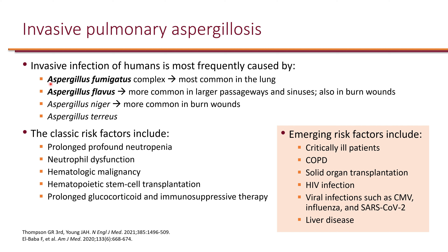Here are the common aspergillus species. Pretty much most of these are due to Aspergillus fumigatus for pulmonary aspergillosis, as well as Aspergillus flavus. The rest are not commonly seen in the lung — for example, Aspergillus niger is more common in burn wounds. Classic risk factors for aspergillosis include prolonged profound neutropenia — essentially absolute neutrophil count under 100 — neutrophil dysfunction, hematologic malignancy, hematopoietic stem cell transplantation, and prolonged glucocorticoid and immunosuppression therapy.